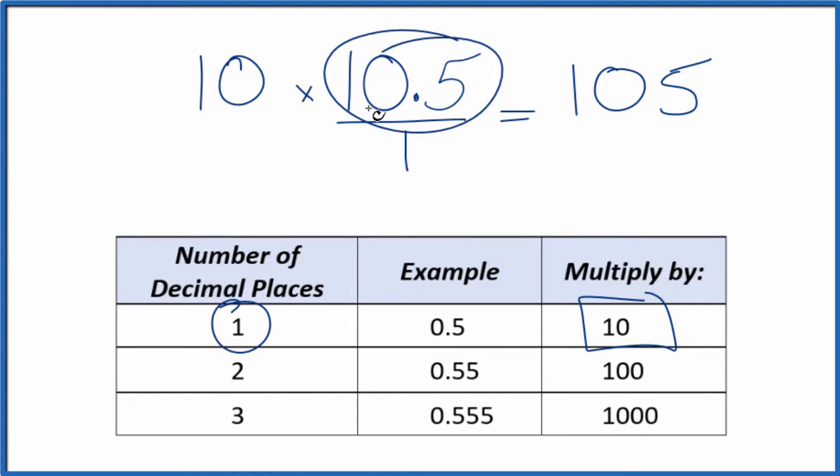But we can't just multiply the numerator by 10. We also need to multiply the denominator by 10. That's because 10 divided by 10, that's just 1. When we multiply by 1 we don't change the value, just the way it's represented. 10 times 1 is 10.